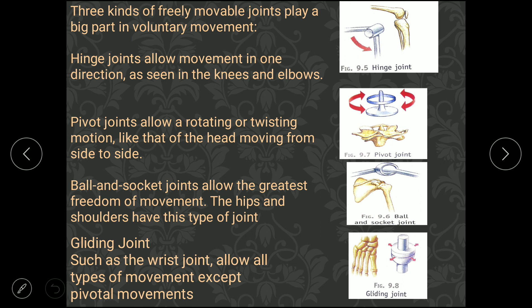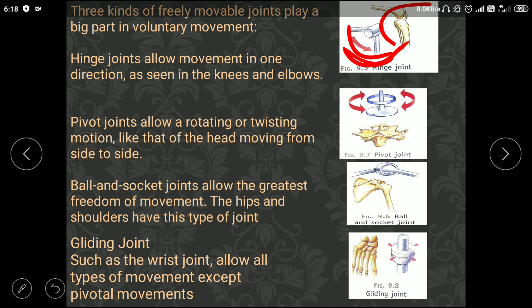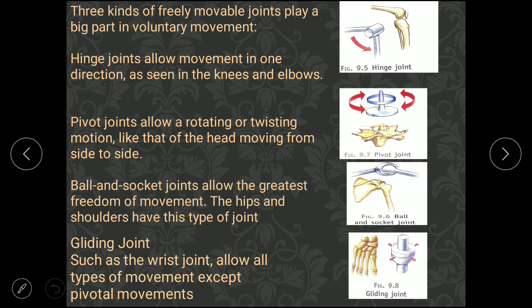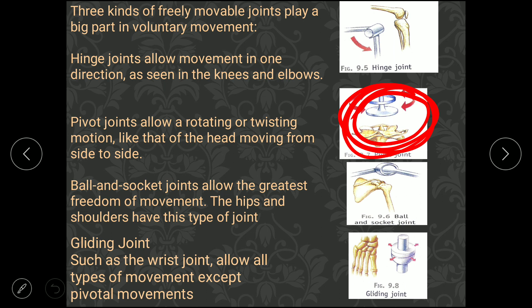Joints connect bones and make them movable — without joints, bones would be like pieces of wood. There are four kinds of joints. The hinge joint moves like a door, only one side — it is found in the elbow and knees. The pivot joint allows rotation or twisting and is found only in the neck — move your neck and you can see how it works.